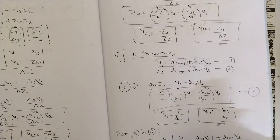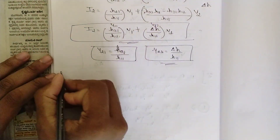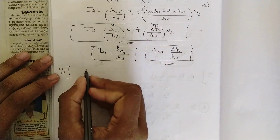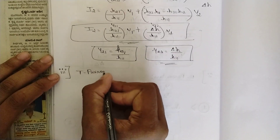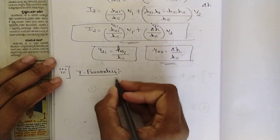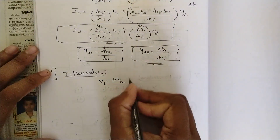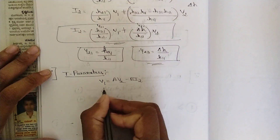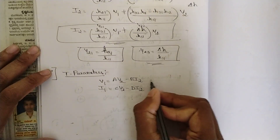We have solved for all four values — Y11, Y12, Y21, Y22 — in terms of H parameters. Now we have one more to cover: Y parameters in terms of T parameters (also called ABCD parameters). Write the T parameter equations: V1 = A·V2 minus B·I2, and I1 = C·V2 minus D·I2. Name these equation 1 and equation 2.